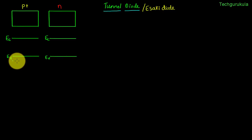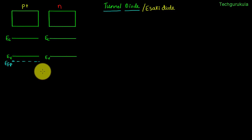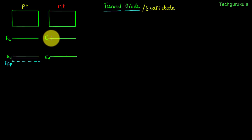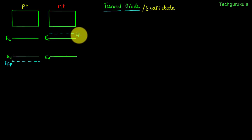I am representing the Fermi energy level of the p-side of the tunnel diode here — let's call this EFP, the Fermi energy level on the p-side. Similarly, on the n-side when we heavily dope it, the Fermi energy level wouldn't just move close to Ec; instead it goes into the conduction band itself. Then the semiconductor is a degenerate semiconductor. So I am representing the Fermi energy level here as EFN.